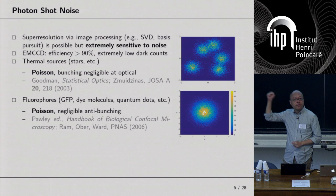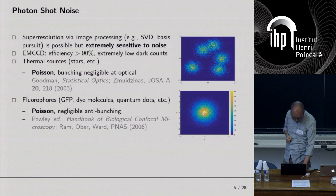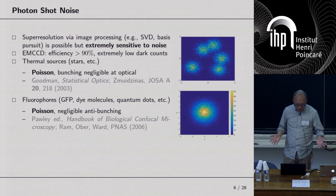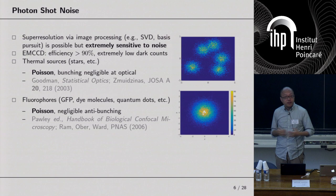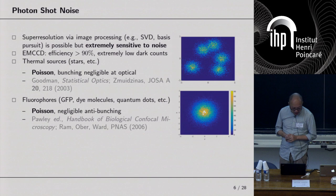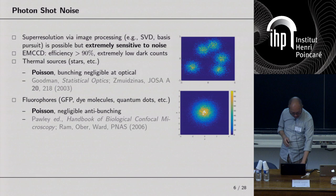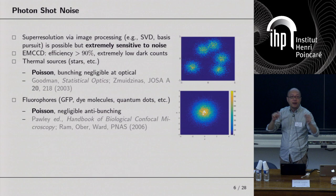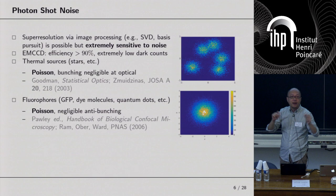Photon shot noise comes from the particle nature of light — the random arrivals of photons on your image plane. In astronomy, at optical frequencies with thermal optical sources, it is standard to use the Poisson photon counting model. People in quantum optics are very interested in bunching from thermal sources, but it's actually very negligible — no one cares about it in practical astronomy. Similarly, fluorescence microscopy uses the Poisson model because fluorophores emit fluorescent light very weakly. You could see some anti-bunching if you tried hard enough, but it's not worth the effort.